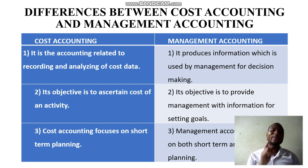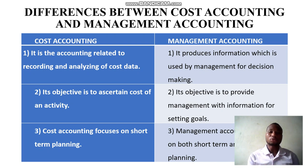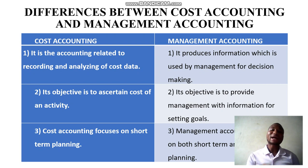The main objective of cost accounting is ascertaining the cost of activities — which could be about a product, a process, or a service. But with management accounting, it is there to provide management with information for achieving certain goals.